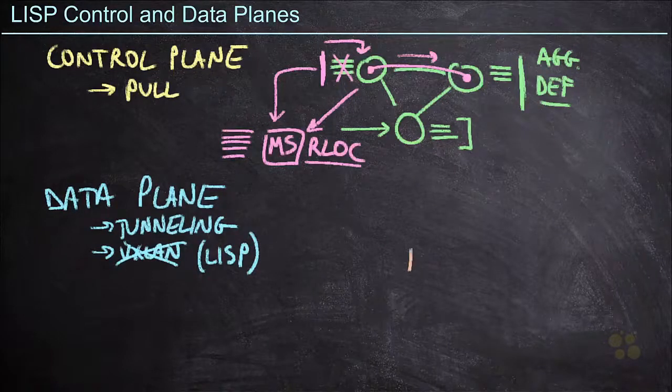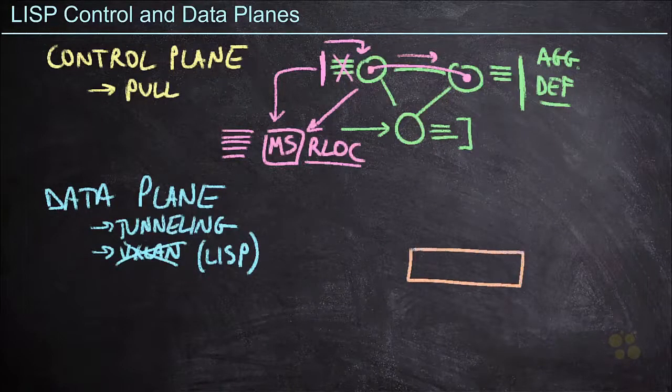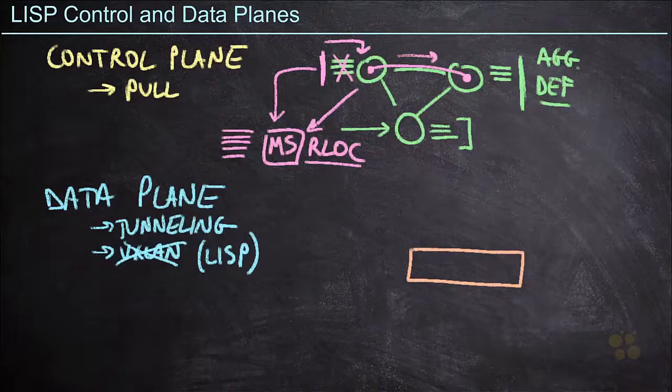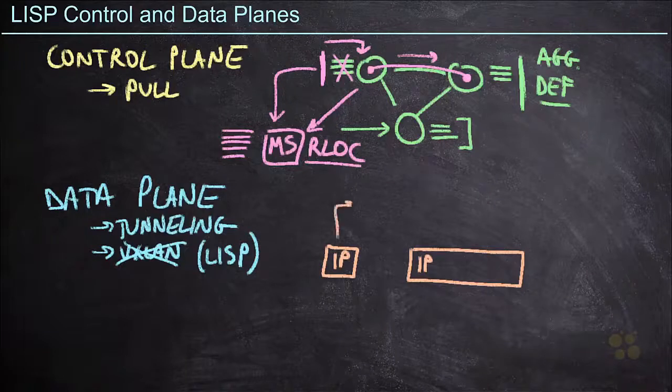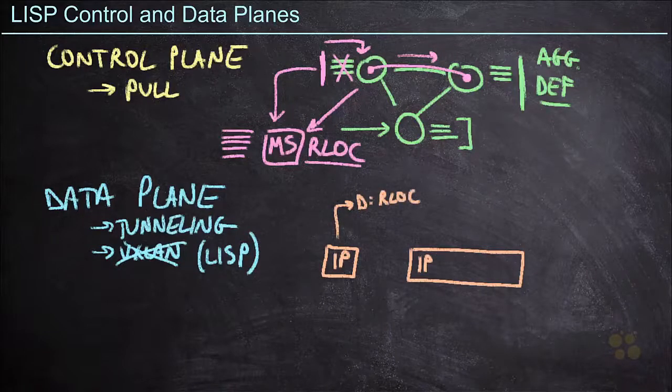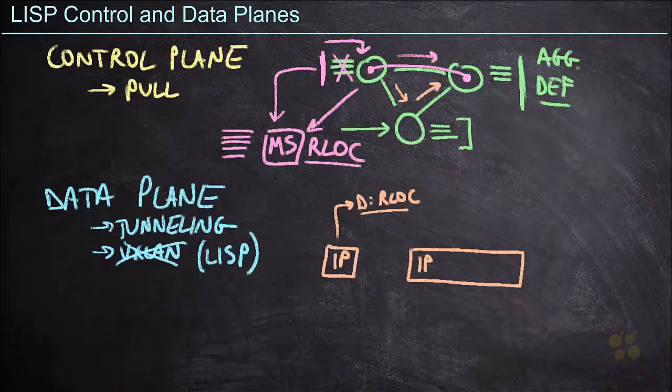Now, as with most tunneling mechanisms, we're going to take that original packet and encapsulate that inside of another header. This original packet has the original IP source and destination addresses. And we're going to encapsulate that in a new IP header that has the new source and destination addresses. The new destination address is going to be that routing locator. And as we know, as we hand those packets off within the network, this is the only IP address that we're concerned with reaching. And this is why our routing table sizes can be much smaller within a LISP domain.